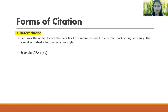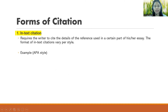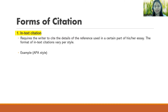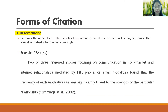Now, we have forms of citations. Number one is in-text citation. From the word 'in-text,' meaning you are citing a source inside the text — the source should be written within the text. This requires the writer to cite the details of the reference used in a certain part of the essay. The format of in-text citation varies per style. We have two ways of citing our source in in-text citation.